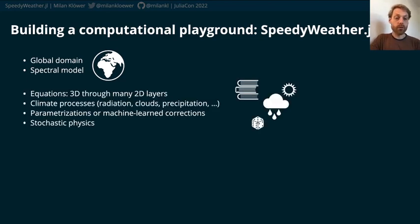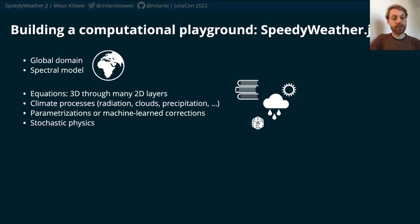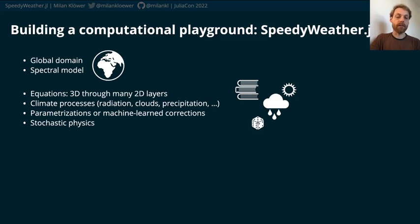Then we wanted to go to 3D equations — not just 2D. In weather, a lot of processes are still hydrostatic, meaning we can think about 3D as many stacked 2D layers. We also want to include climate processes like radiation, clouds, and precipitation, in order to make things more realistic and not just simulate a very idealized fluid.